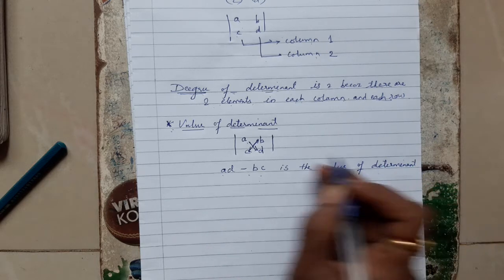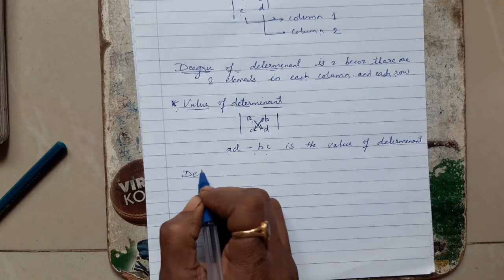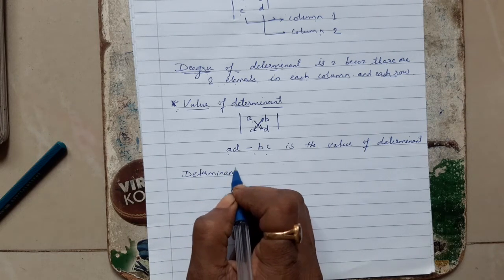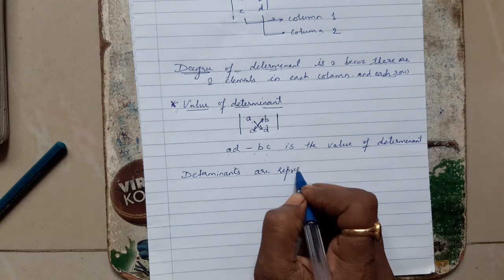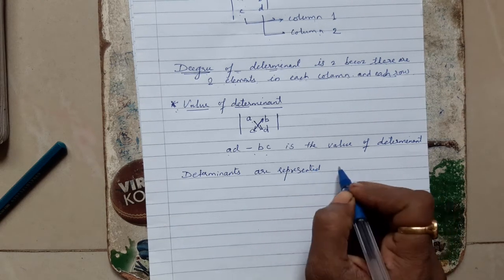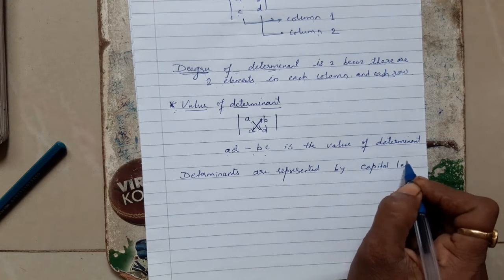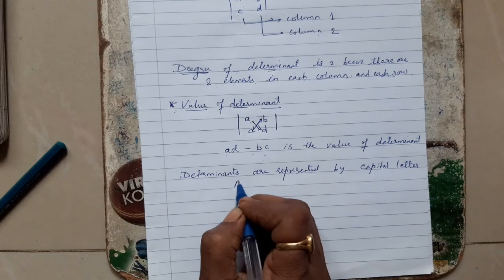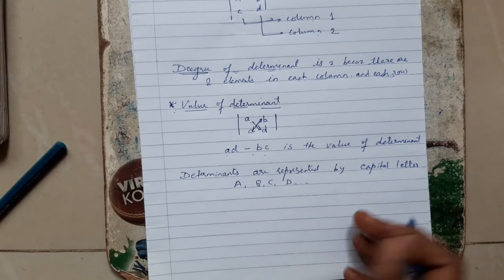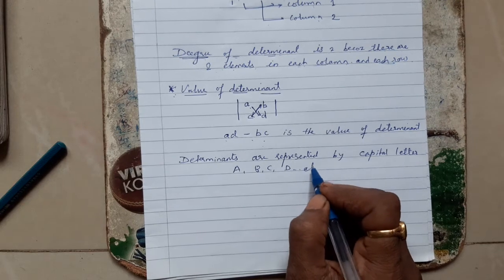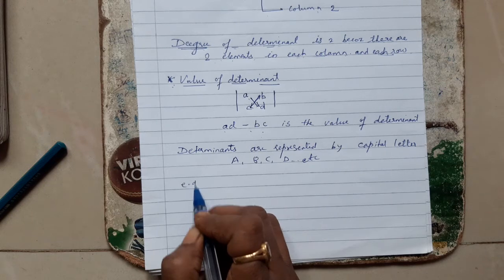Determinants are represented by capital letters A, B, C, D, whichever you want. Now let us see one example. You have to find the value of the determinant. Your determinant is 5, 6, 4, and 8.